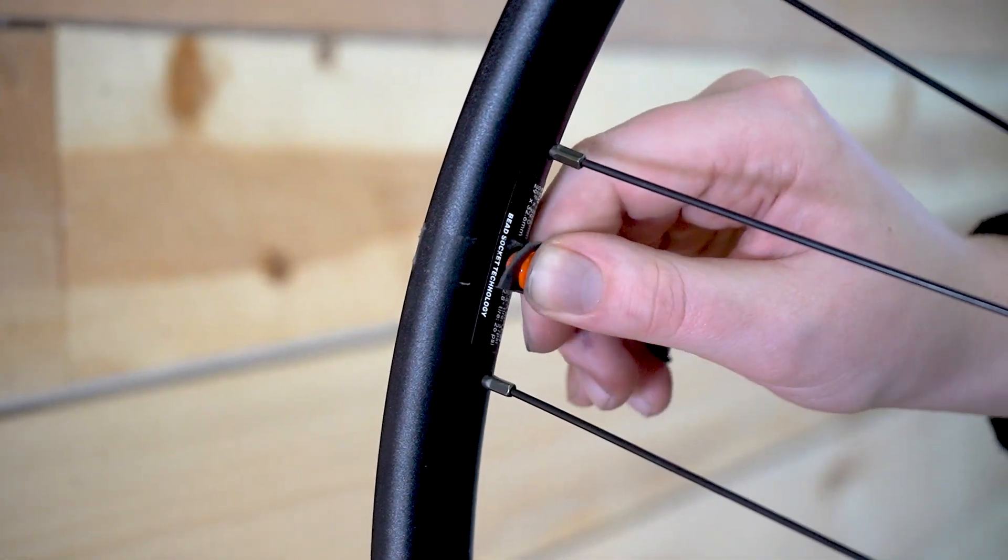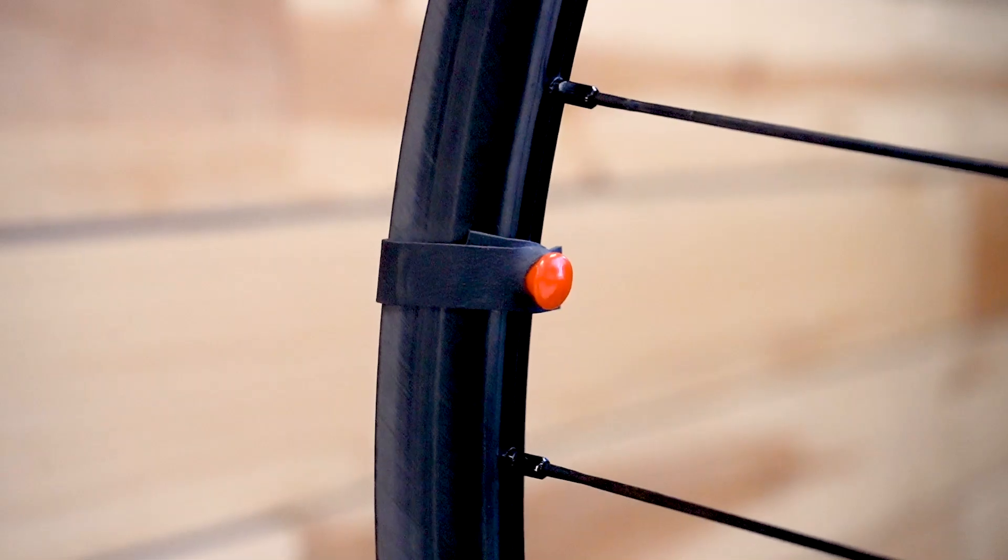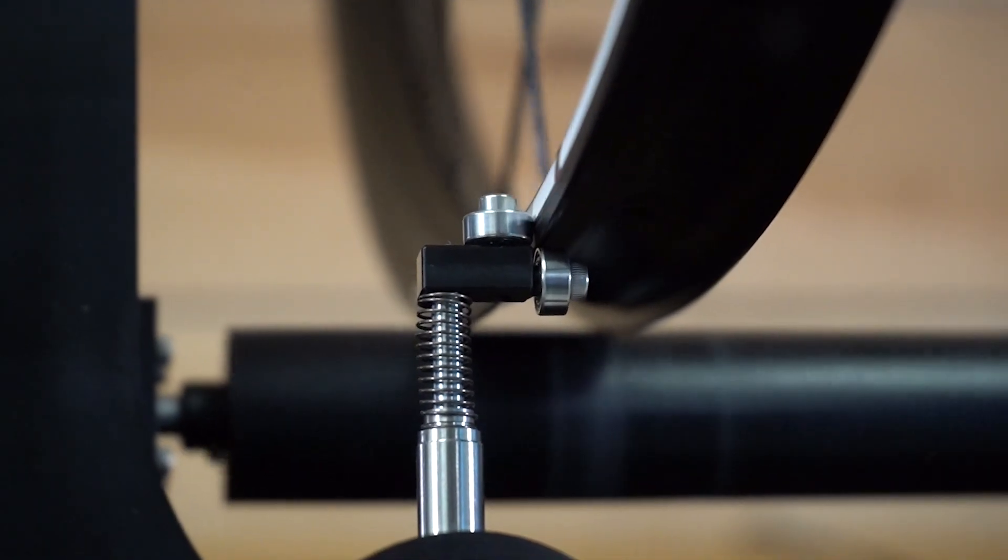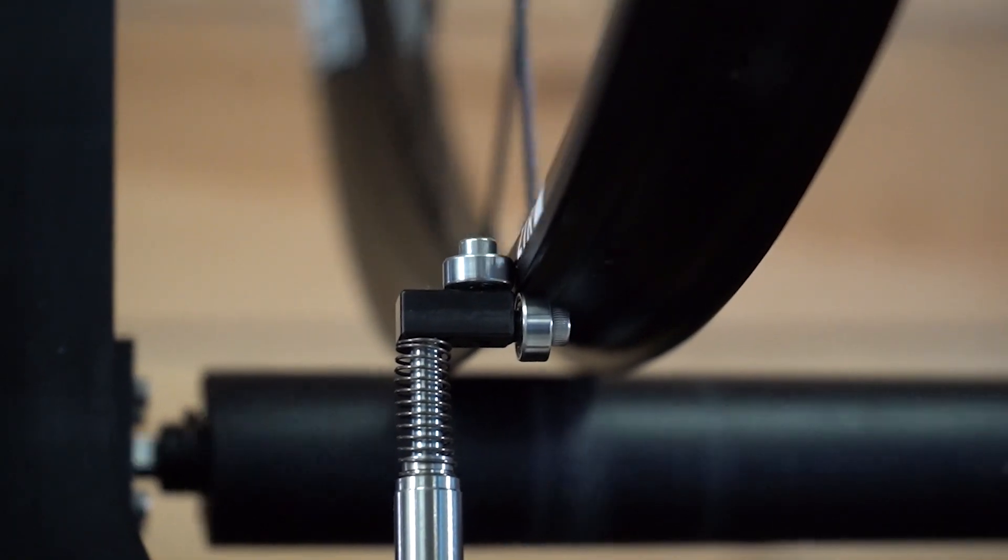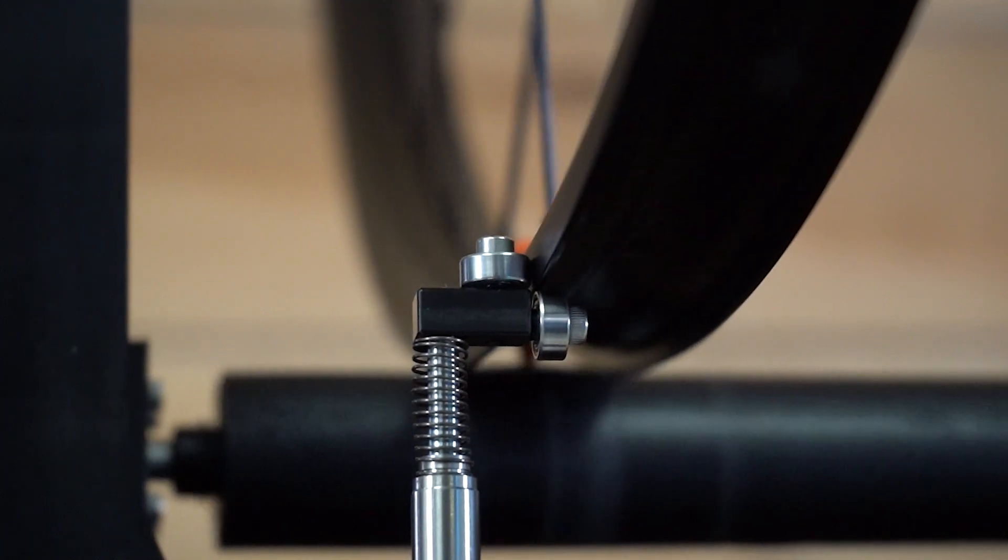Next, we place the rubber band indicator on the rim. This creates a distinct signal in the lateral and radial sensors, allowing the system to index the wheel as it spins in the stand.